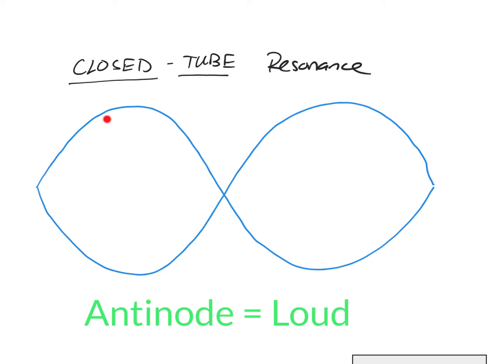So if we model a sound wave as a standing wave and you can see that I drew this here, this is one complete wavelength. When we find the resonance what we're looking for are the anti-nodes. So this part of the wave will be a loud sound and this part of the wave will be a loud sound.